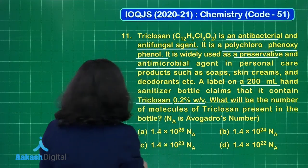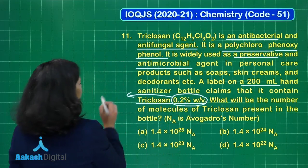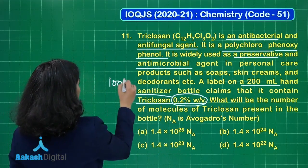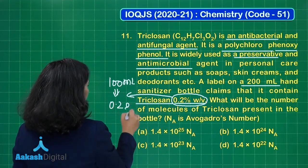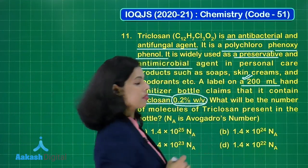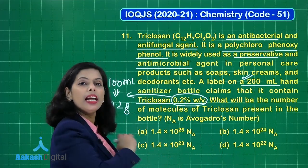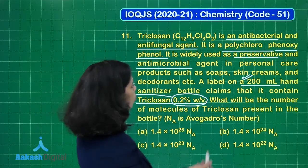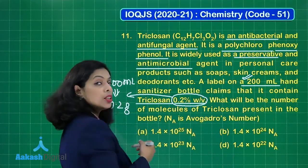0.2% weight by volume means that a 100 ml bottle contains 0.2 grams of triclosan. Since the bottle in the question is 200 ml, we can find the mass of triclosan present. We need to identify the number of molecules of triclosan present in the bottle, with Nₐ given as Avogadro's number.